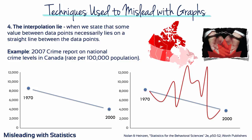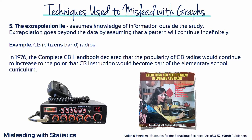Actually, in between these two time points, the crime levels had experienced substantial fluctuations. To spot the interpolation lie, check to be sure that a reasonable number of in-between data points have been reported. Number five: the extrapolation lie. This lie assumes knowledge of information outside the study. Extrapolation goes beyond the data by assuming a pattern will continue indefinitely. For example, CB or citizens band radios — a once popular communication device now used mostly by long distance truckers — have long since been replaced by mobile phones. Yet in 1976, the complete CB handbook declared that the popularity of CB radios would continue to increase to the point that CB instruction would become part of the elementary school curriculum. The CB radio book didn't take into account the invention of cell phones. So don't assume a pattern in the data will continue.